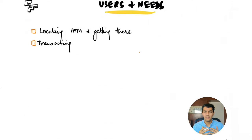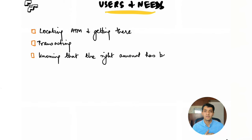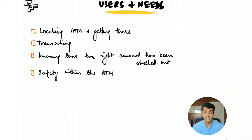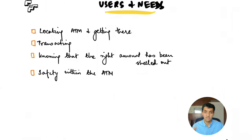The next step in the journey is knowing that the right amount has actually come out of the ATM. For a sighted person it's easy to tell a ten-rupee note from a hundred-rupee note, but for a visually impaired person it's very difficult — that's a big need. And finally there's safety: because someone is visually impaired, they may fear that someone might steal their money, and they don't feel safe transacting at an ATM. That's also a very significant need.